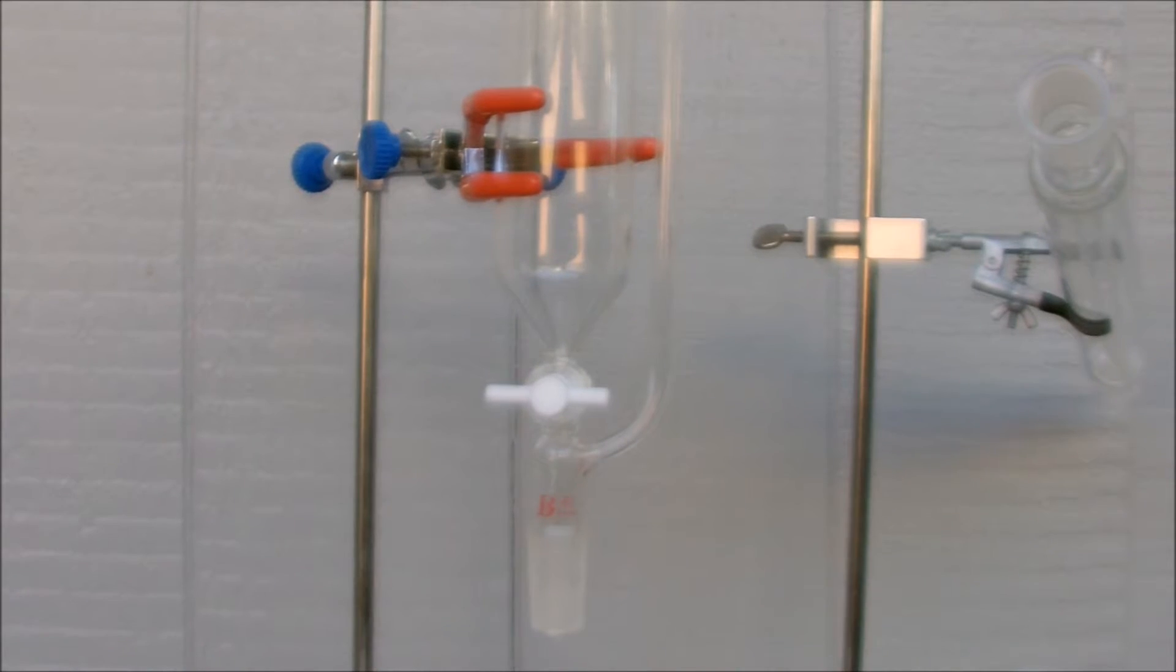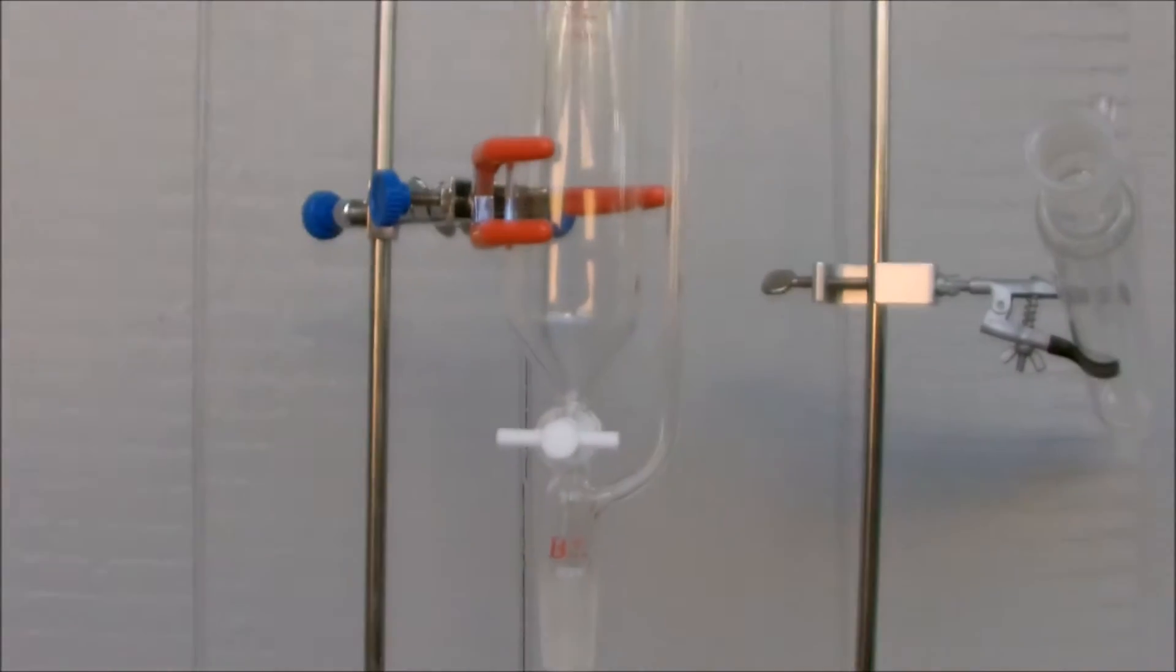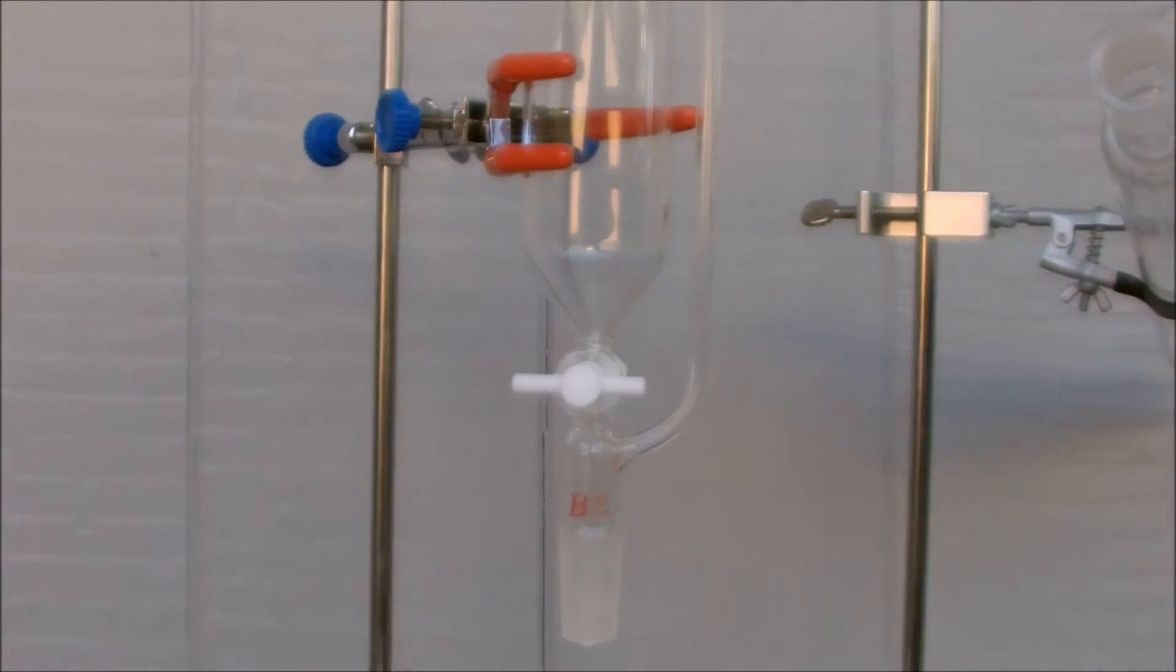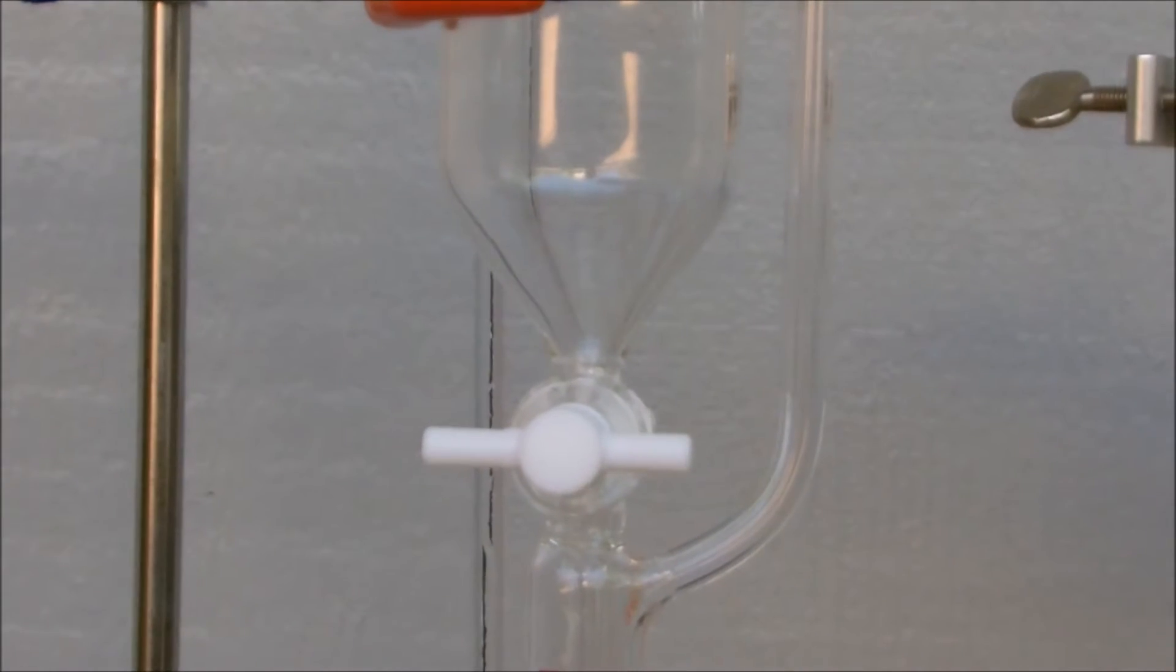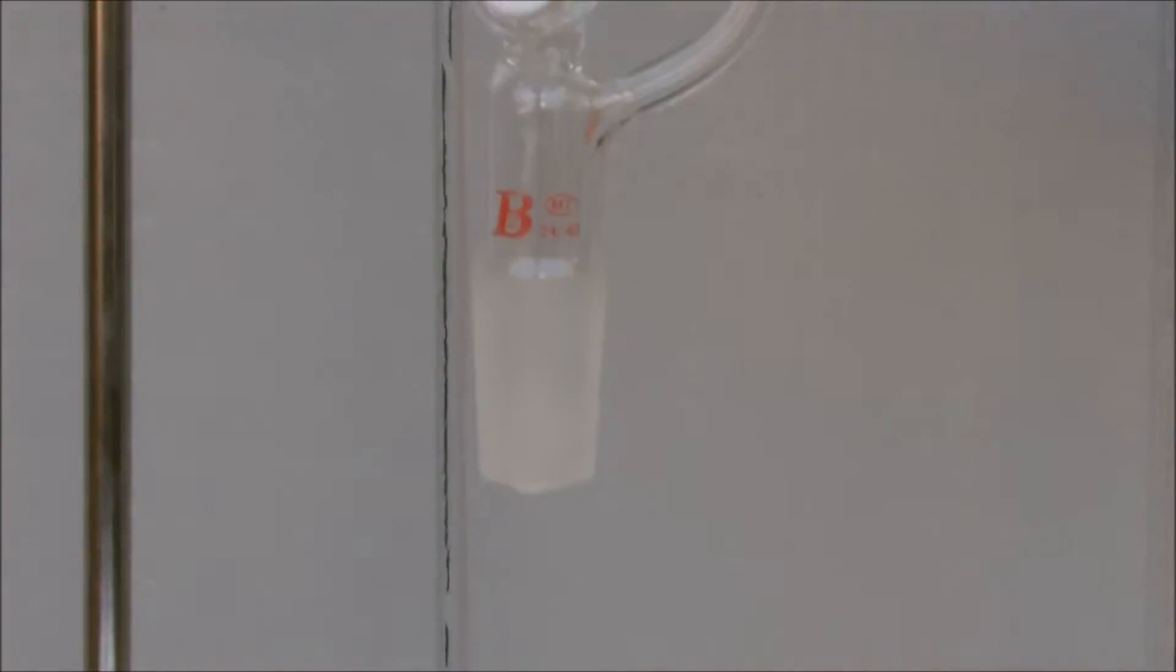Now that we have it clamped up, we can measure out the hydrochloric acid and put it in here. Make sure that the stopcock is perpendicular to the flow of liquid.